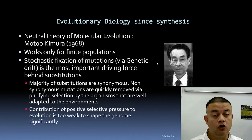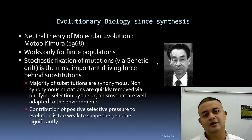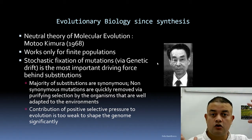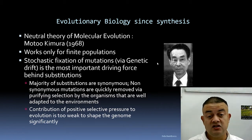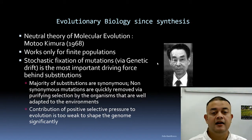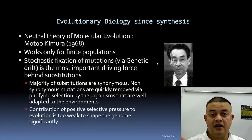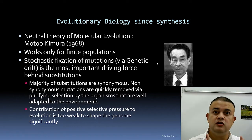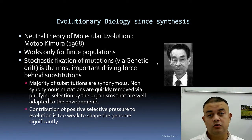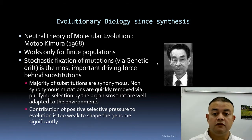Drift plays a role especially during population bottleneck situations when the population shrinks to very few individuals. Think of a massive asteroid striking the Earth — like the Yucatan Peninsula KT mass extinction event. Our primate lineage sprang out after that event. Mammals started their radiation post-KT extinction because during that event the number of individuals was very small, and drift played a major role.